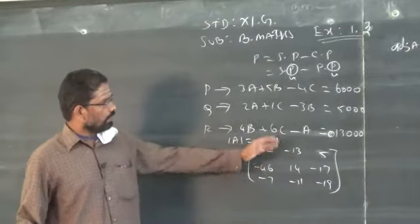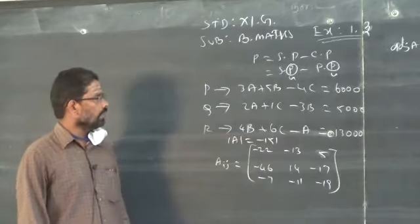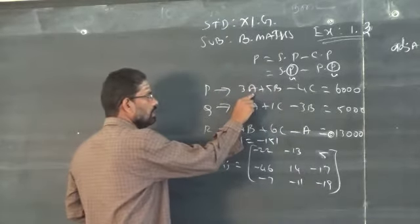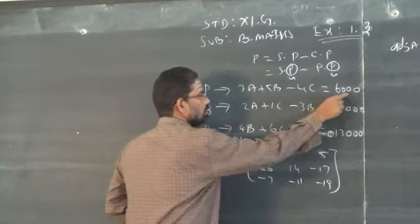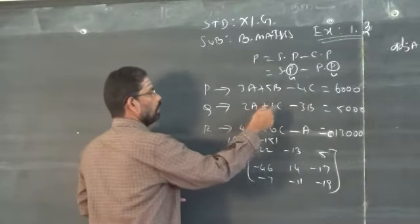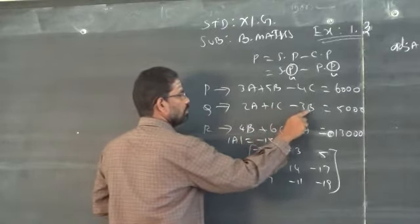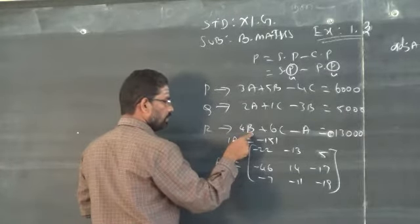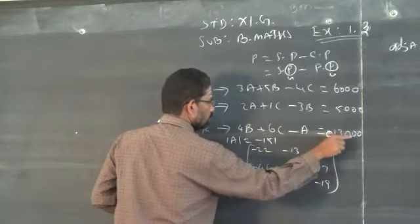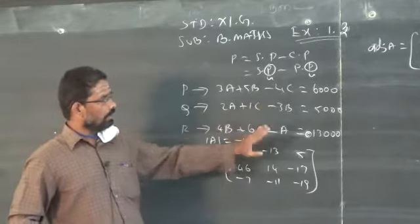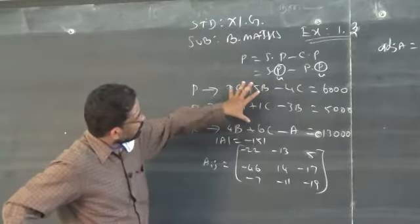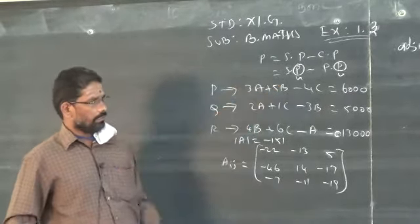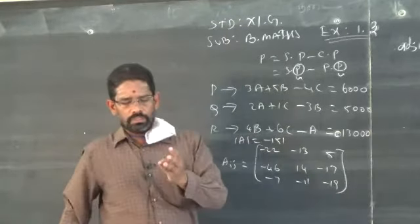So these are your equations. You know how to rewrite them in matrix format. The cost of A is given as x, B as y, C as z. So rewrite as: 3x plus 5y minus 4z equals 6000; then 2x plus z minus 3y equals 5000; then 4y plus 6z minus x equals 13000. Replace A by x, B by y, C by z. You will get 3 equations in terms of x, y and z.